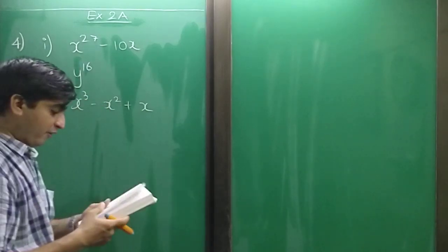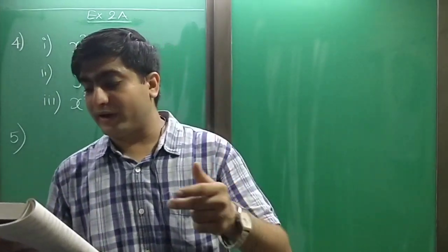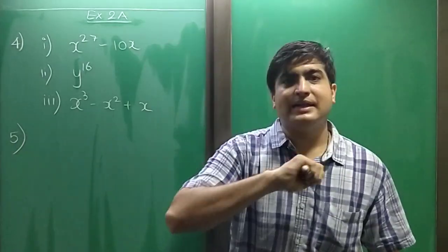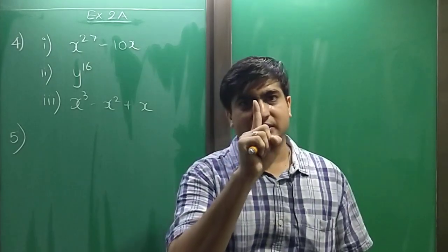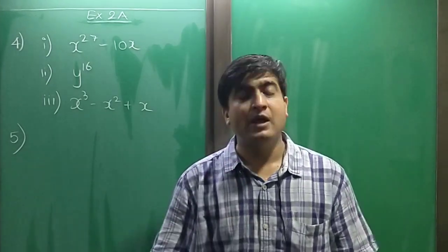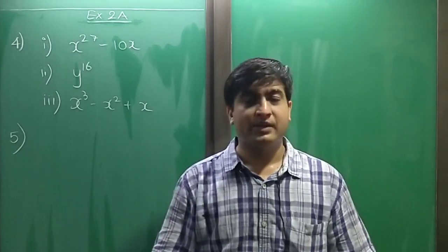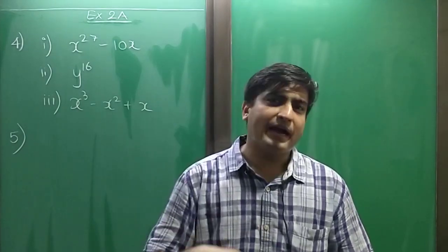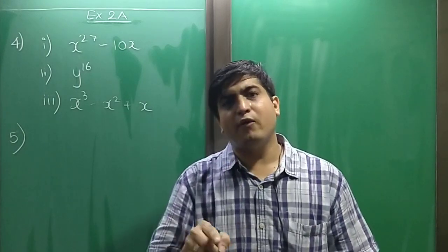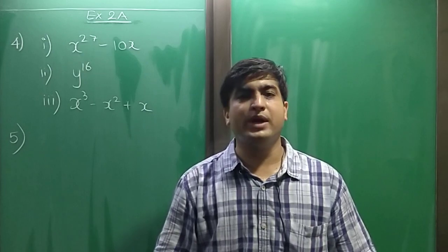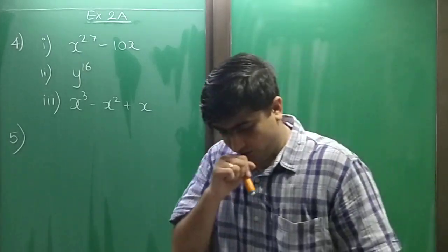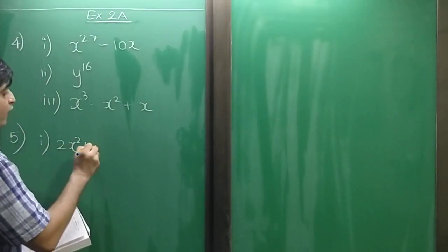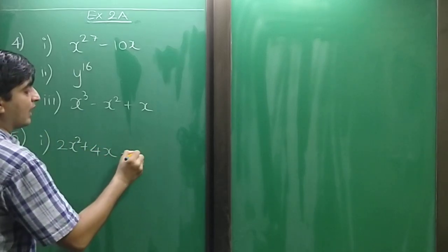Major sum number 5: classify the following as linear, quadratic, and cubic polynomials. A degree-1 polynomial is linear, degree-2 is quadratic, and degree-3 is cubic. Sum 1: 2x squared plus 4x — degree is 2, so it is quadratic. Sum 2: x minus x cubed — degree is 3, so it is cubic.